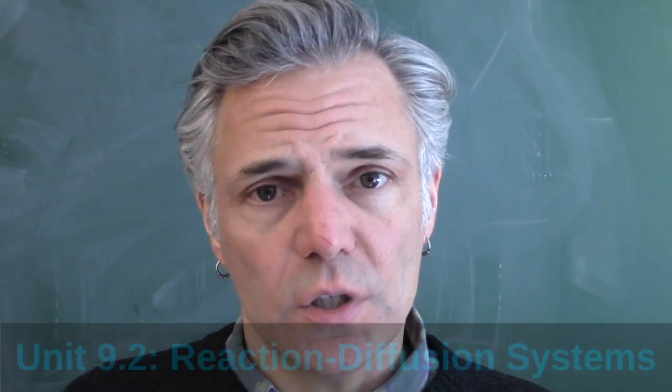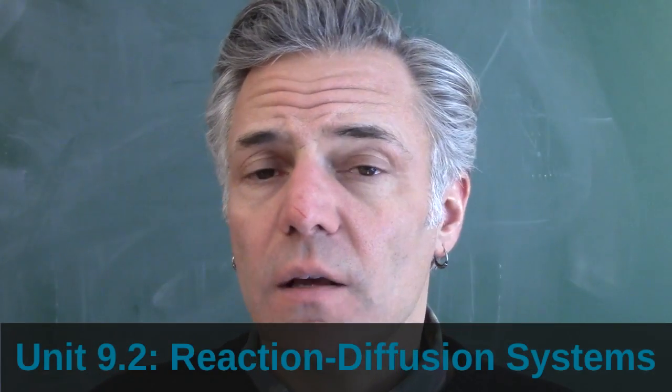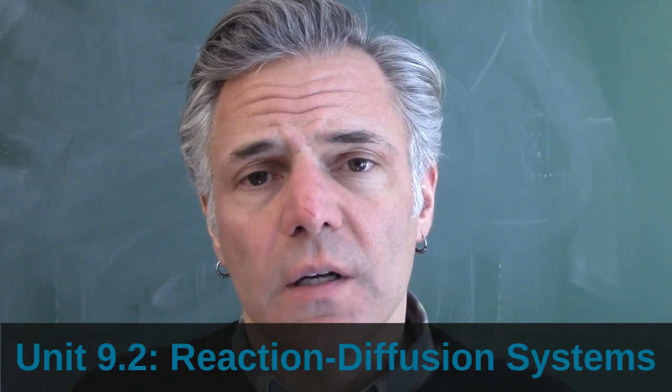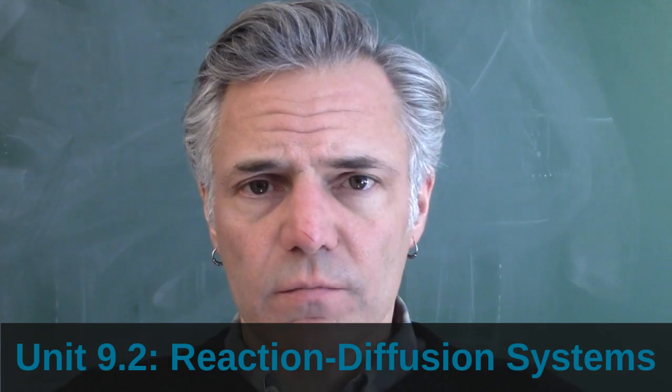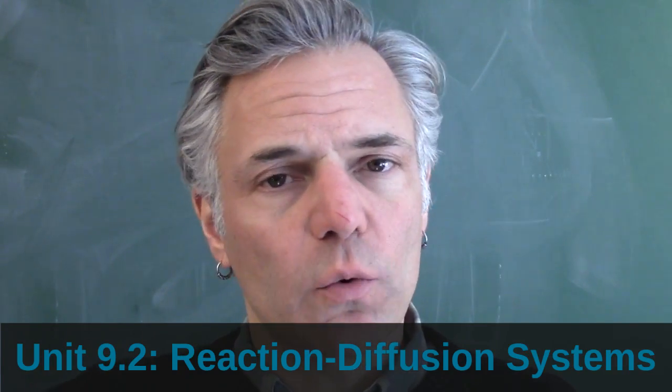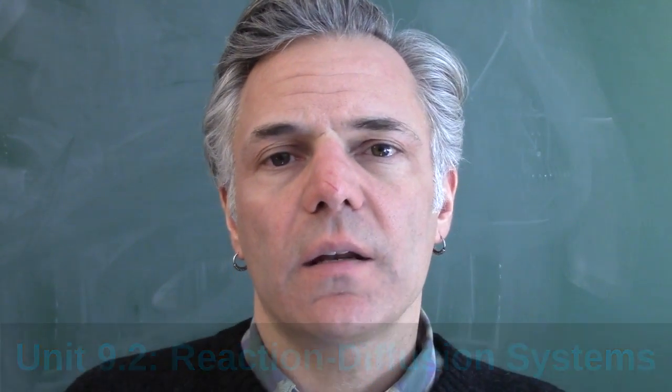There's a different type of system, though, called reaction-diffusion systems, and they're specified as follows. Let's imagine we have some diffusive medium, air, water, who knows, and now not one chemical or type of thing, but two types of things, A and B. And imagine A and B undergo some sort of reaction, and A and B are also still free to diffuse.